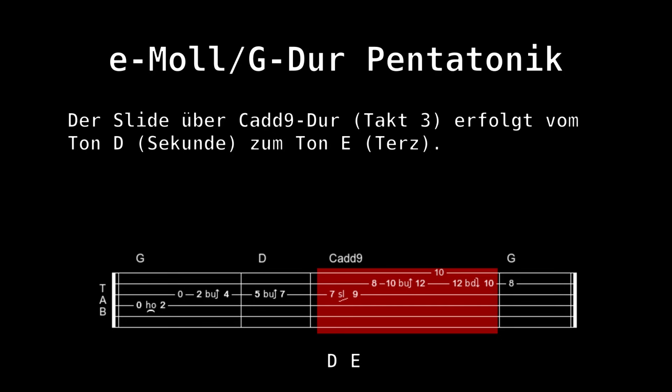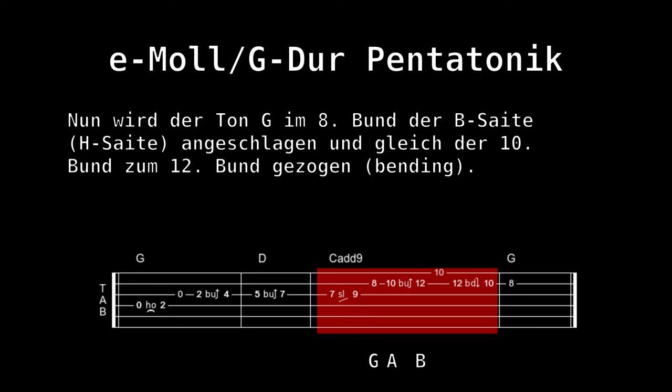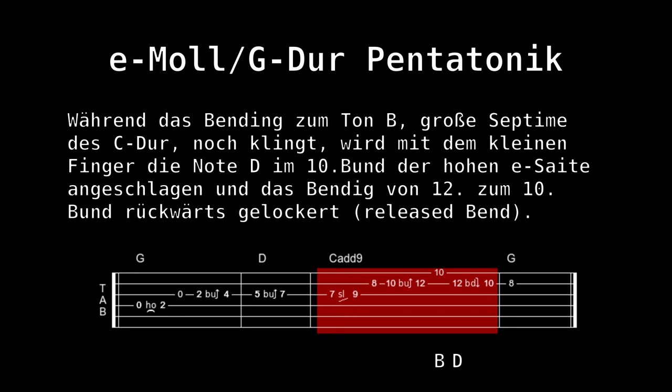Der Slide über C-Add-9 im dritten Takt erfolgt vom Ton D, der Sekunde, zum Ton E, der Terz. Nun wird der Ton G im achten Bund der H-Seite angeschlagen, gleich danach ein Bending vom zehnten zum zwölften Bund gemacht. Während das Bending zum Ton H noch klingt, wird mit dem kleinen Finger die Note D im zehnten Bund der hohen E-Seite angeschlagen und ein Release Bend vom zwölften zum zehnten Bund gemacht.